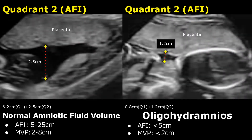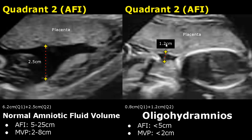In quadrant 2, the deepest pocket measurement is 2.5 cm for normal fluid volume. In the Oligohydramnios image, the quadrant 2 measurement is 1.2 cm — another small pocket of fluid.